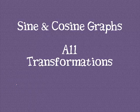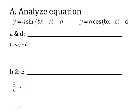This video is about sine and cosine graphs and putting all the transformations together in one equation. The first thing you want to do is analyze the equation you get. Notice a is here, b is the coefficient of x, c is added or subtracted to whatever x is, and d is out here. Same thing with cosine: a, b, c, and d. You have to know what the specific letters will do to your graph.